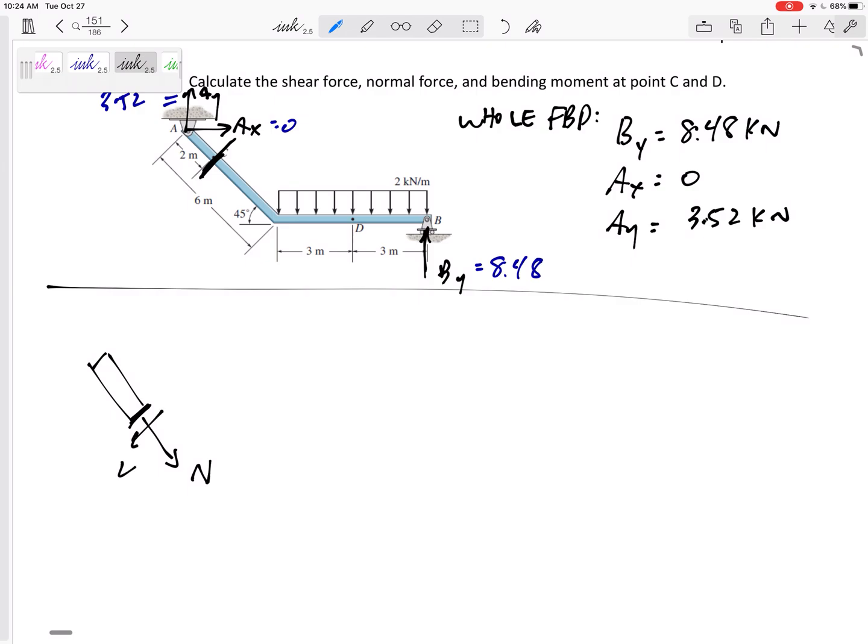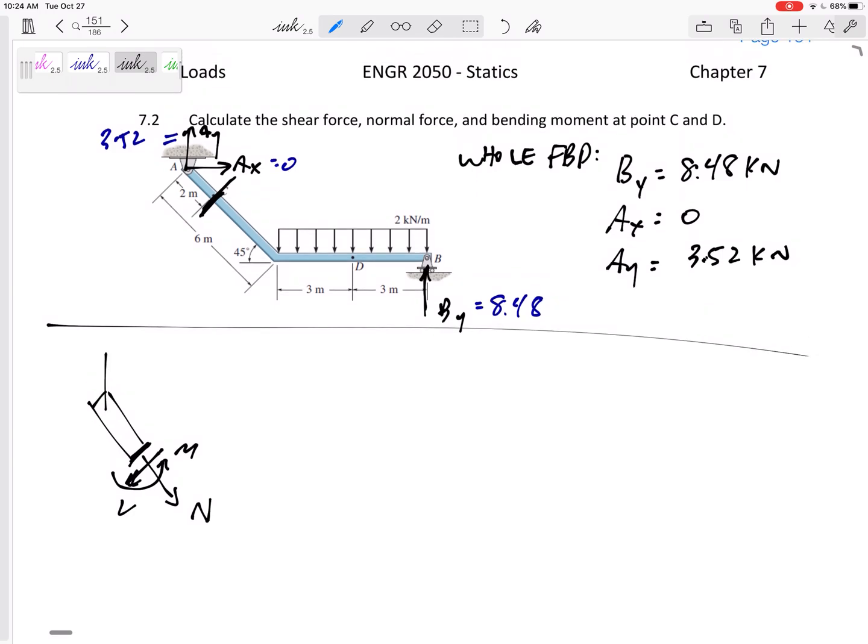So here we go. So here's my cut right here. So draw the N. Draw the N out of the cut. Positive sign convention. Draw the V down here. So I've kind of turned my head a little bit. V down here. M right there.